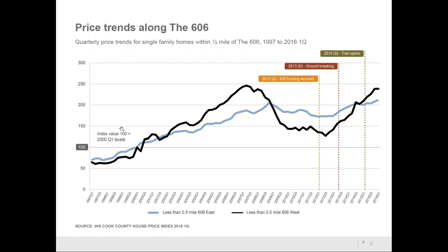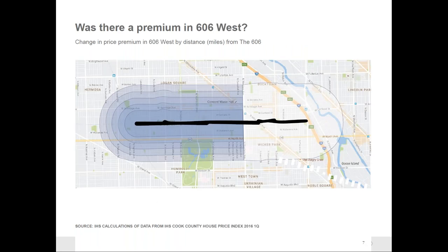In order to understand the relationship to the development of the 606, we added a geospatial element to the analysis to understand to what degree buyers were paying a premium to live within certain distances of the trail. We found a premium — but critically from a policy perspective, it was really just in 606 West that we detected it. Within a fifth of a mile of the trail, there was a significant premium of about 22%, and that premium dissipated as you got farther away and disappeared at about three-fifths of a mile. We were only able to detect this premium in 606 West — the lower-income, much more vulnerable side of the trail with higher renters and higher costs. That 22.3% premium translates in 606 West to $100,000 on top of the average sale price in 2015.